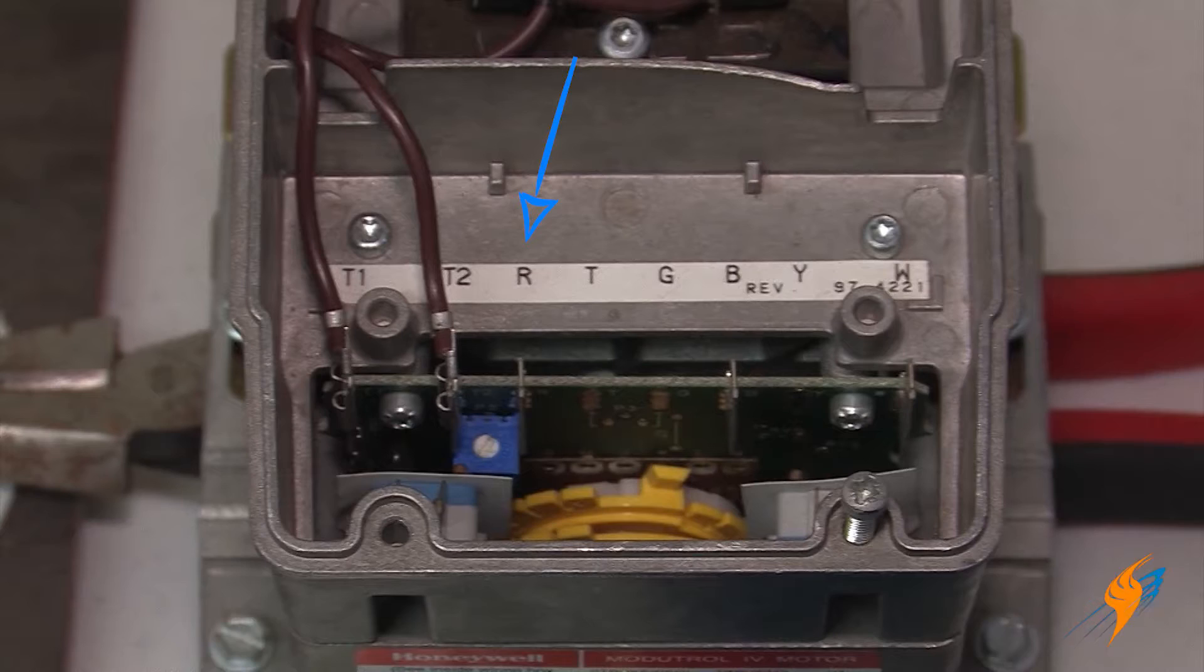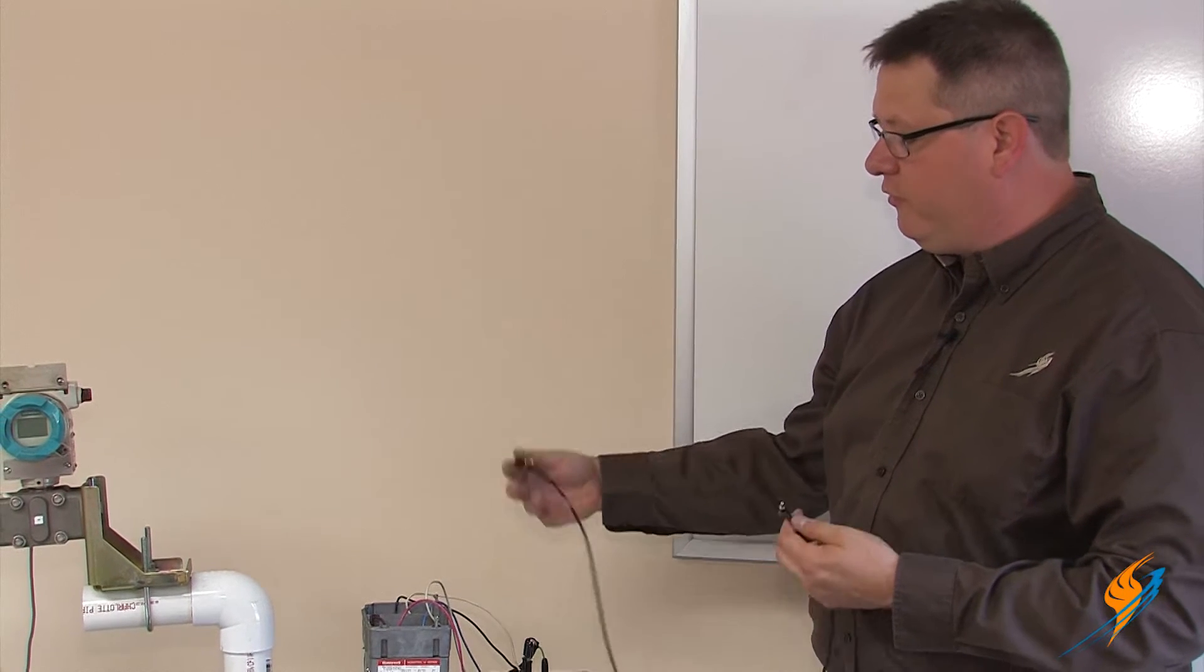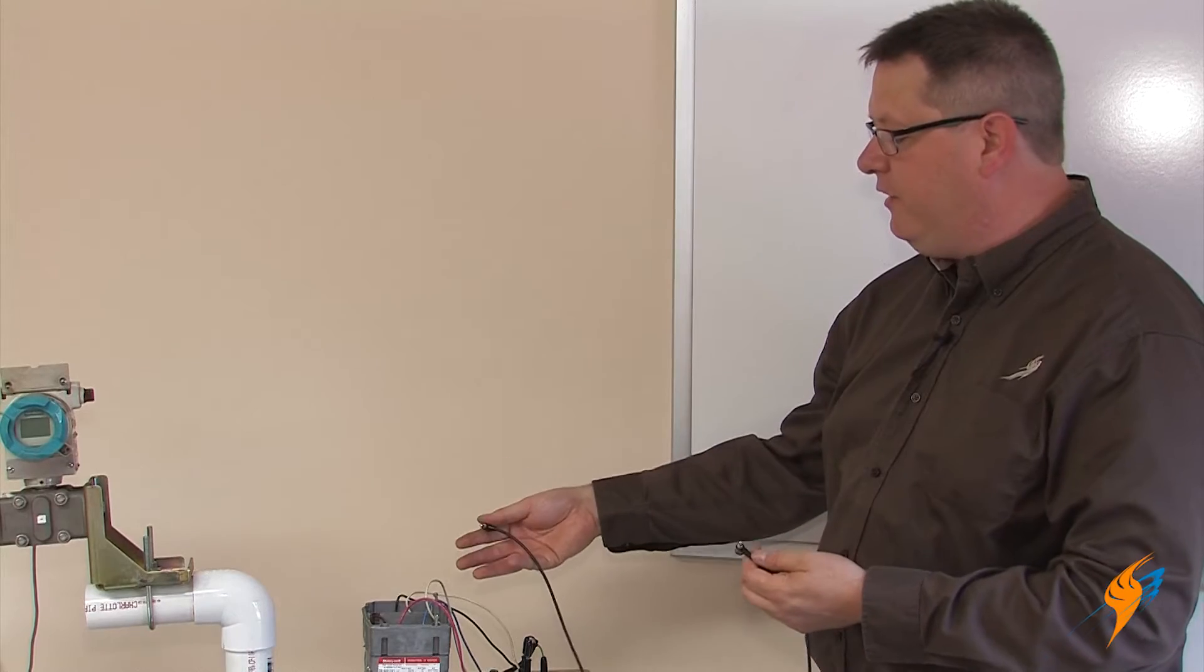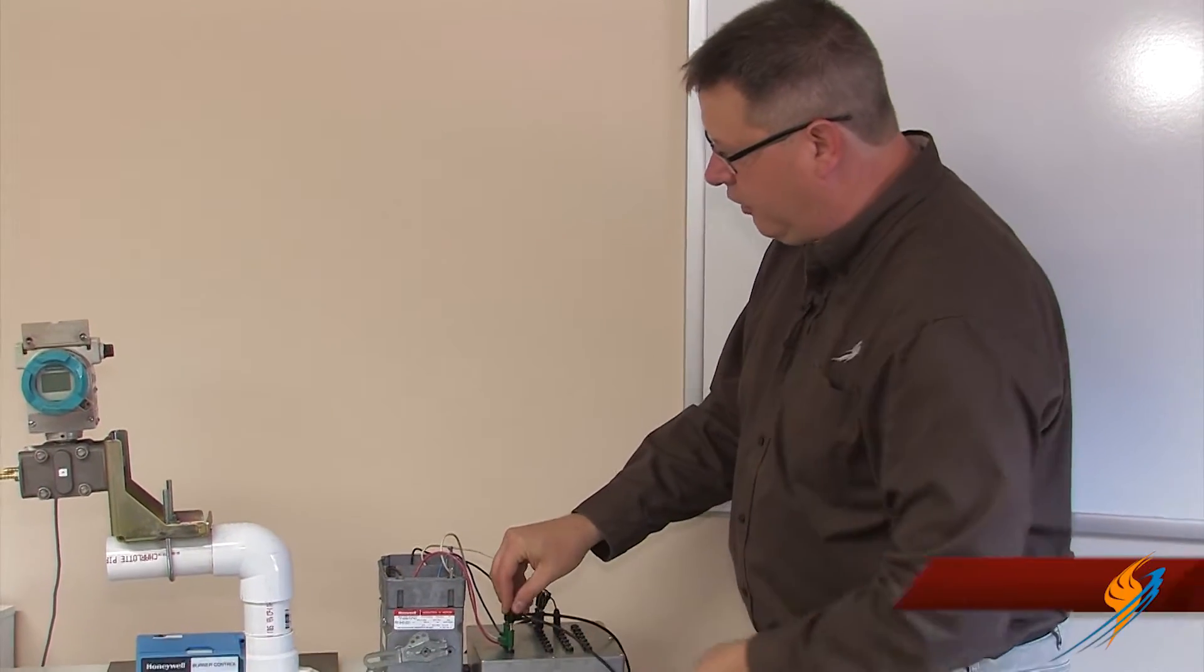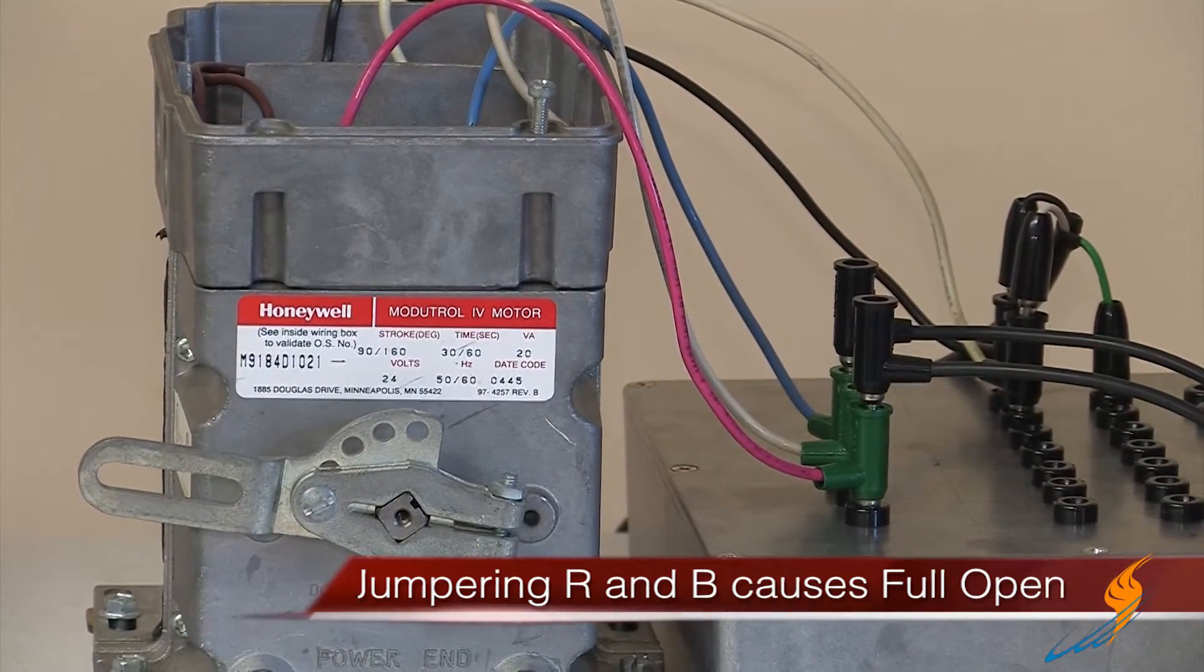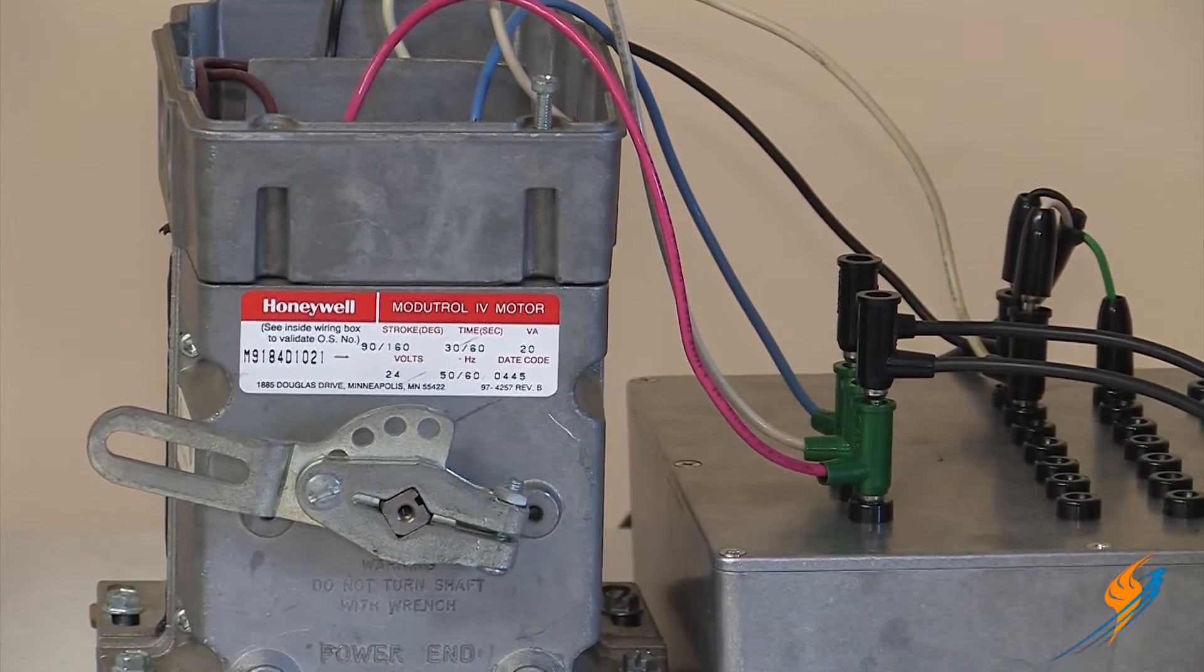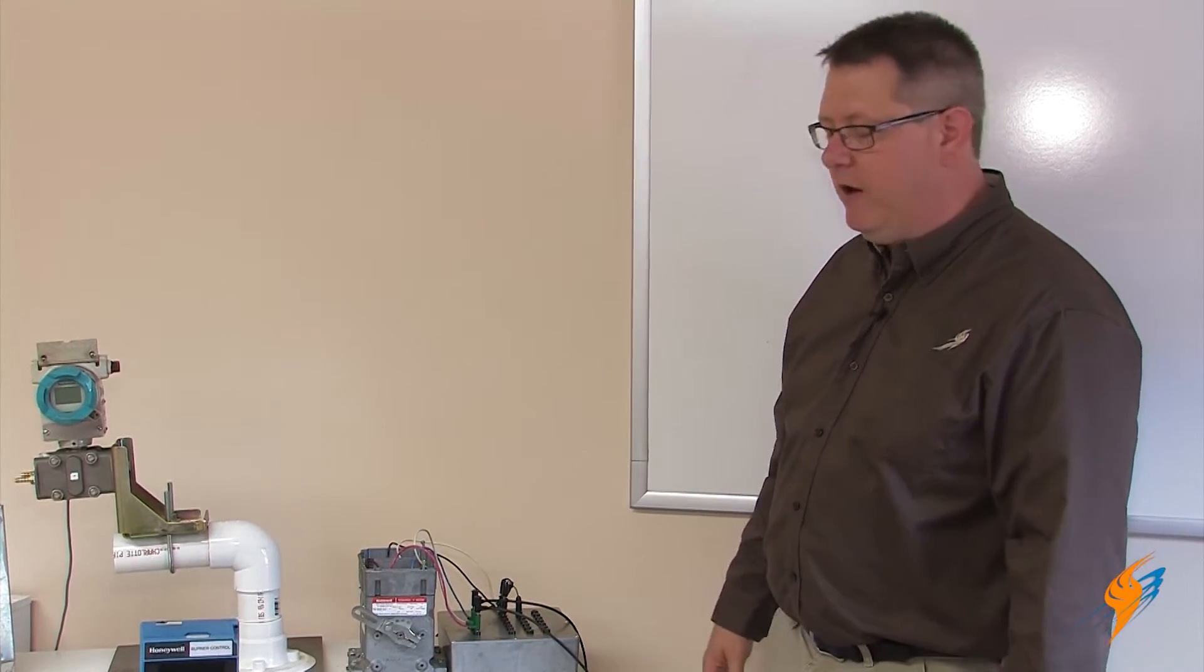We've got three additional terminals in here, the RED, W, and B terminals, which are the terminal inputs that we use to drive this to the open and close position. Basically jumpering the R and B terminals will cause the mod motor to drive to the full open position. We would call that the purge position and that's going to allow the maximum amount of air through the burner to quickly and efficiently purge the combustion chamber.